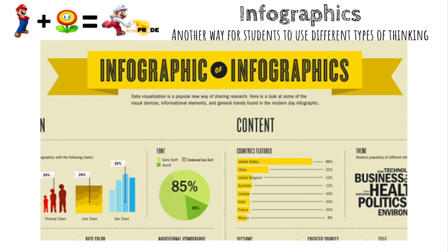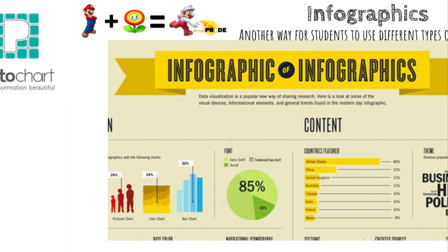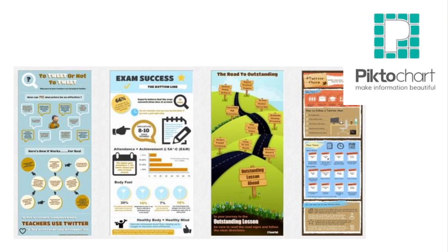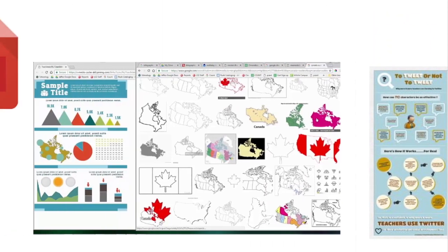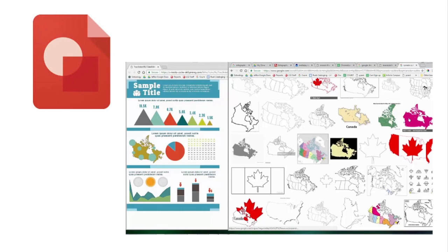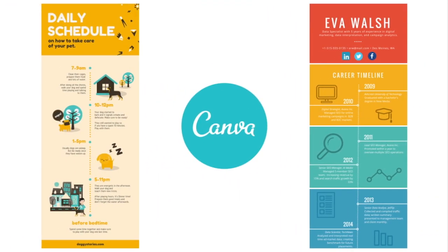Infographics are another way for students to use different types of thinking in the classroom. You can always have students hand-draw them, or level up with digital infographics. You can use the tool Piktochart, which is a great Chrome extension that is also web-based. You can also use Google Drawings to create them. Or you can use my favorite, Canva — I use Canva at least once a day. All of these are free tools.